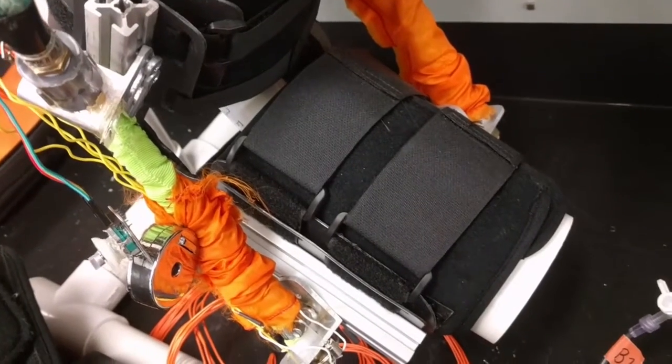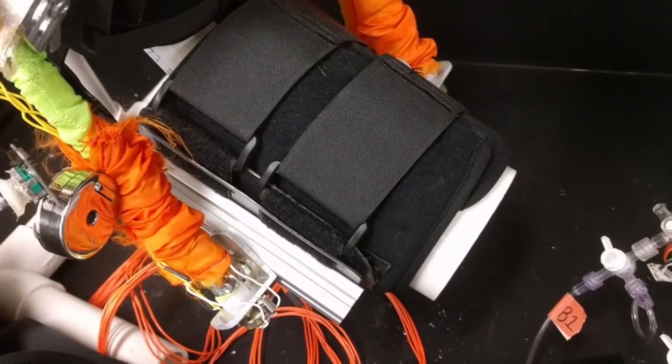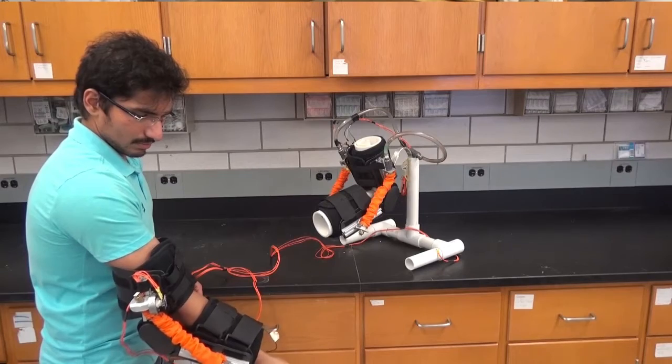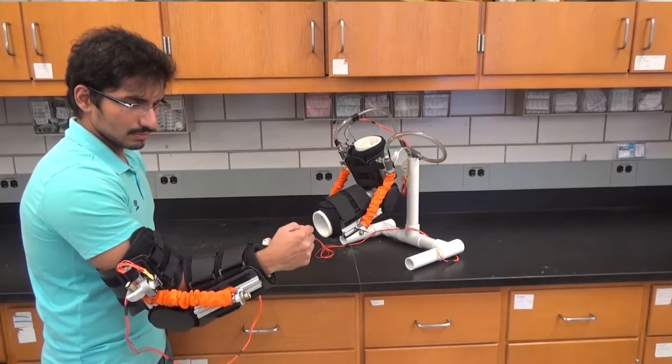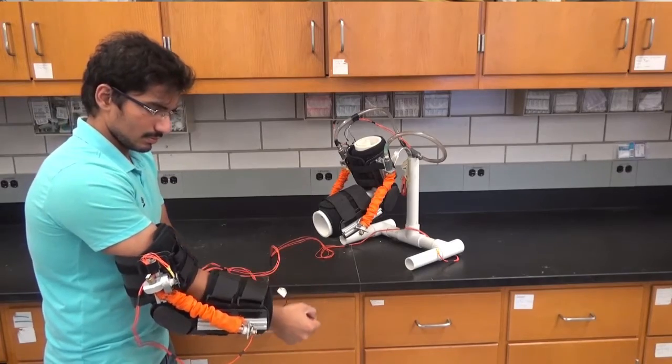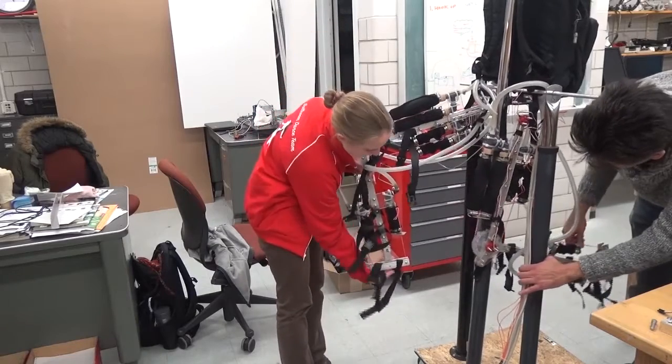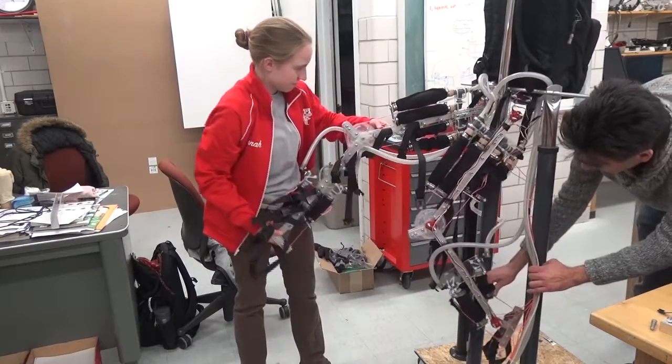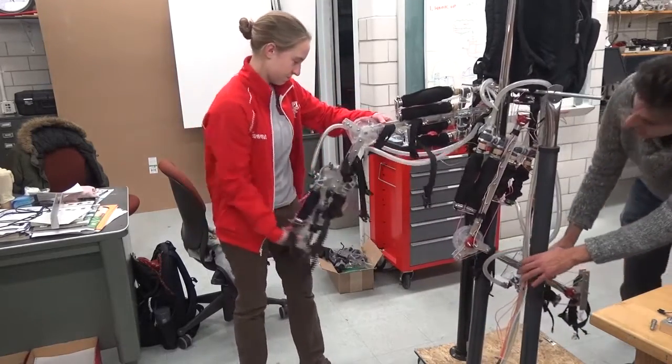Exomusculature is a similar concept as exoskeleton, except instead of rigid external structure, it consists primarily of soft actuators. Here are examples of elbow and leg exomusculatures actuated by hydromuscles. They can be used for rehabilitation or as everyday assistive devices. They can be used in pairs to allow robot teleoperation or human-human interaction, for example, between patient and therapist.